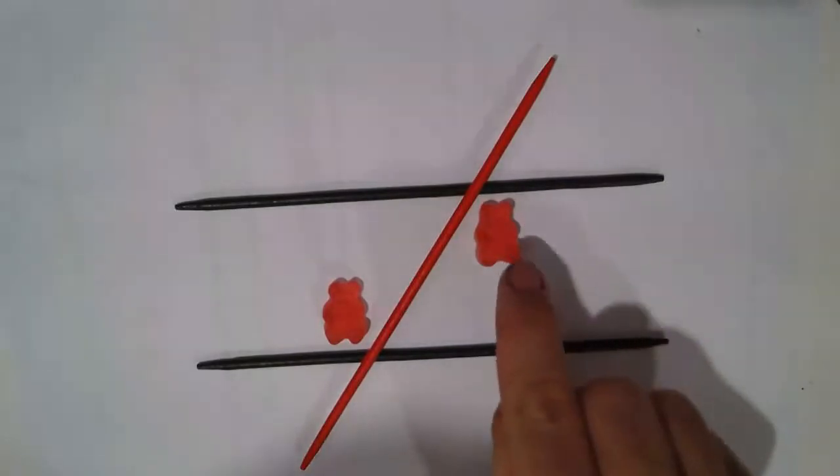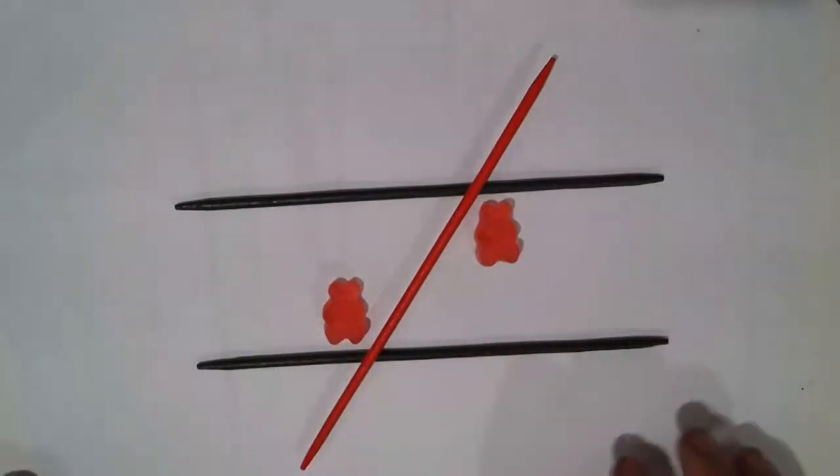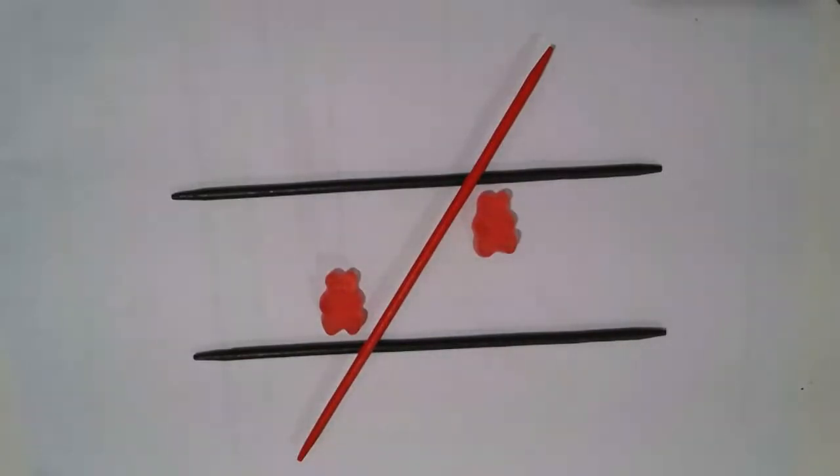So if I know the value of gummy bear A in degrees, that will be exactly the same value for gummy bear B. Alternate angles.